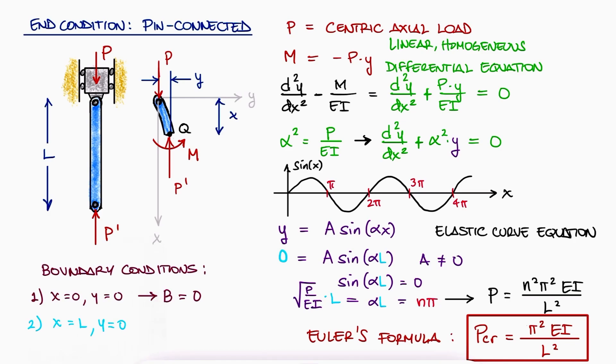The equation of the elastic curve, meaning the equation that describes how the deformed column looks like, would be found by substituting this critical load expression in the y equation that we had in terms of A and alpha. With this elastic curve equation, for any location x along the column, we can see what its deflection y would be.